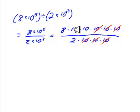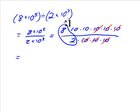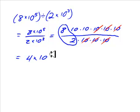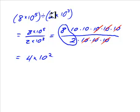So we have 2 tens left on the top, and we still have our 8 divided by 2. Eight divided by 2 gives us 4, and we're multiplying by 10 twice — 10 to the 2nd power. So our rule for division is: divide the coefficients and subtract the exponents. 5 minus 3 gives us 2, so our answer is 4 times 10 to the 2.